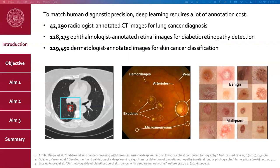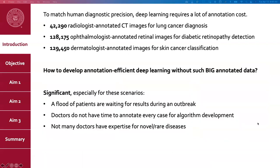Annotating medical images is not actually part of the doctor's routine workflow — it is done just for training the computer. Also, annotating images is not easy; it is tedious, time-consuming, and most importantly, it requires medical expertise. Not everybody can do it. So annotation is very important for developing high-performance deep learning methods, but it is also one of the biggest barriers when people want to apply deep learning to other diseases. This dissertation tries to address the question: how to develop annotation-efficient deep learning without such large annotated datasets.